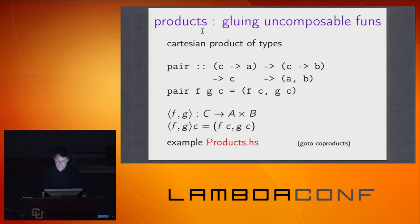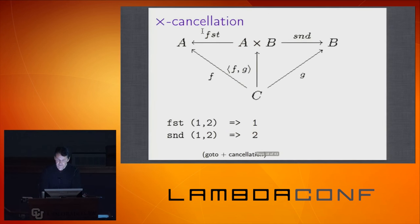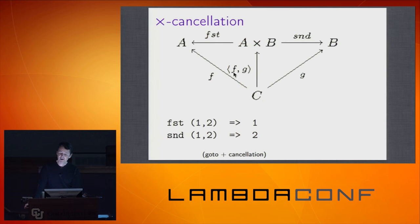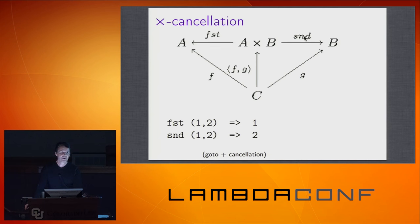Product cancellation: if you've run a pair of functions and gotten back the product a × b, and you need just one piece of it, you call 'fst' or 'snd'. No big deal — it's like car and cdr in Lisp, or first and second.